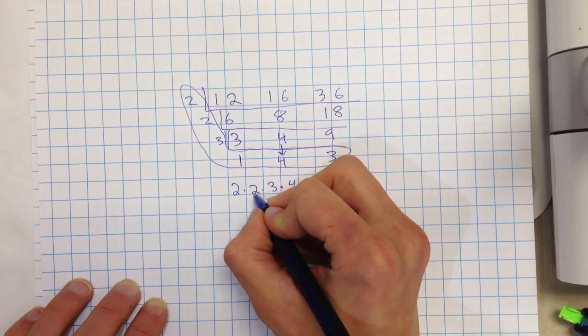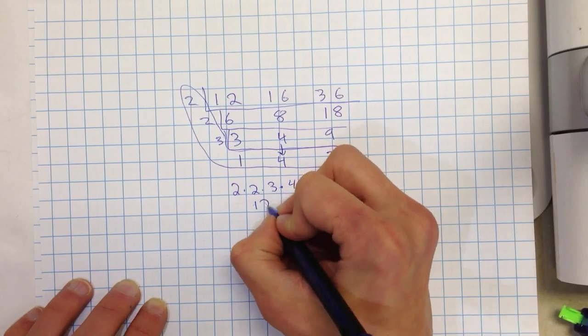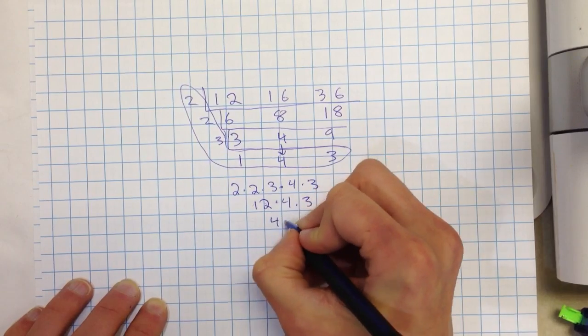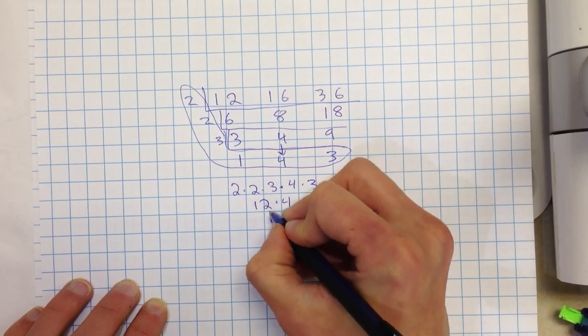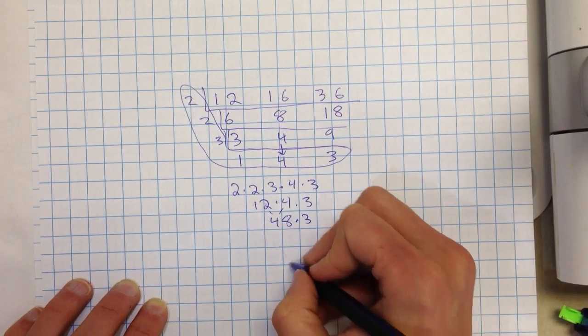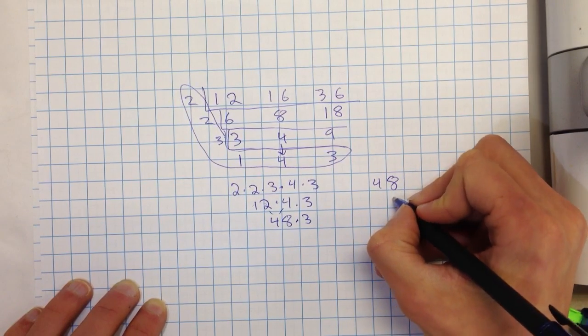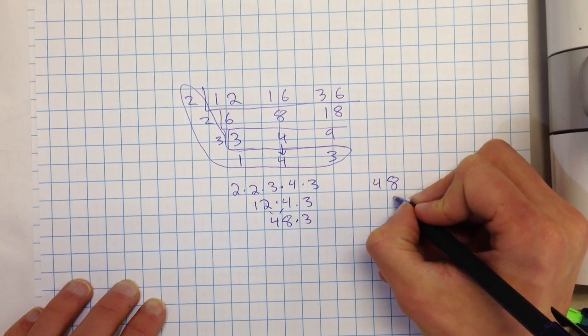So we would have 2 times 2 is 4. 4 times 3 gives us 12 times 4 times 3. That's the same thing as 48 times 3. And again, use your multiplication. Use your space. Show your work.